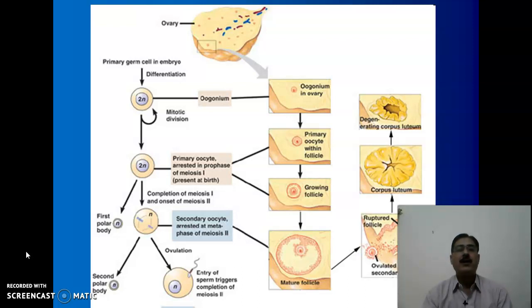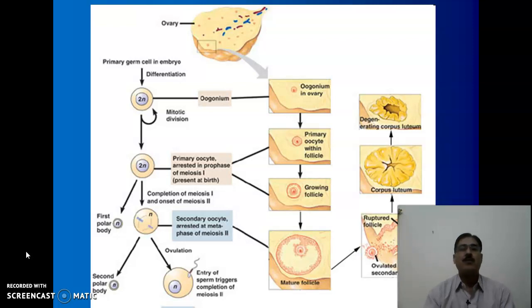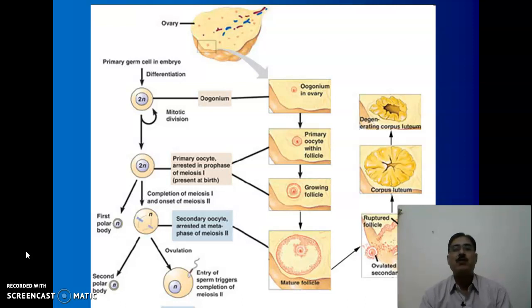Vitellogenesis is very important as far as oogenesis is concerned. It is a part of the growth phase, and the growth phase is very prolonged in the case of gametogenesis which takes place in the female gonad. Here the different stages have been depicted in the chart, beginning from the primordial germ cells, then the differentiation taking place in the oogonium, and the formation of the primary oocyte within the follicle.